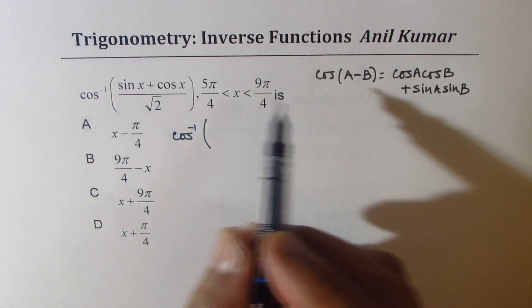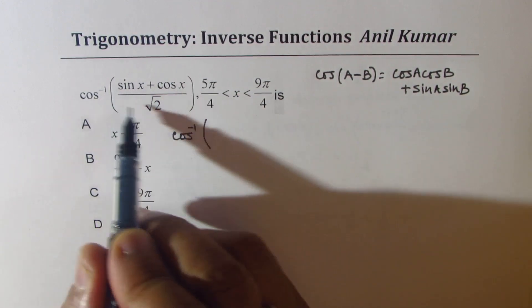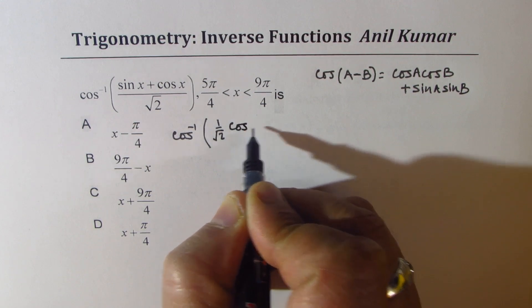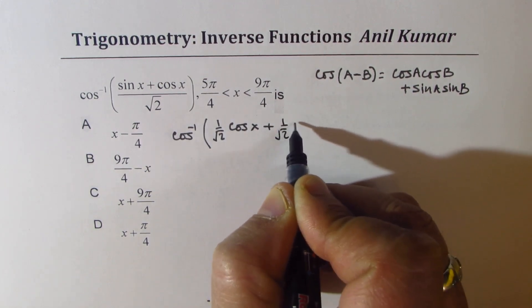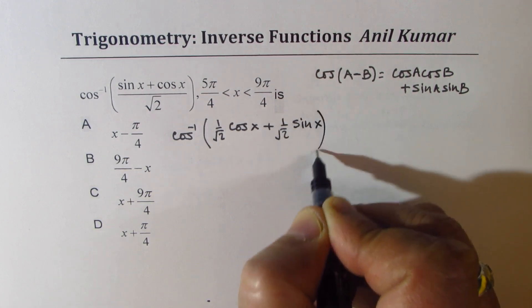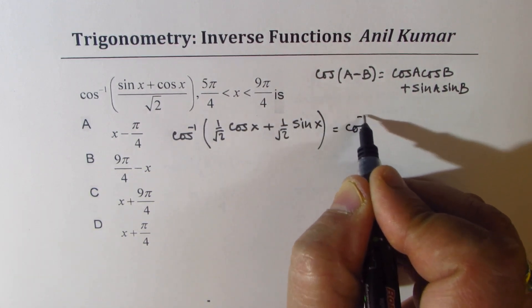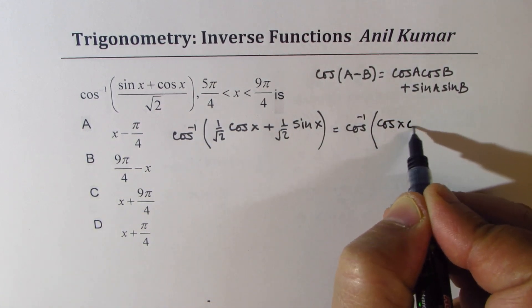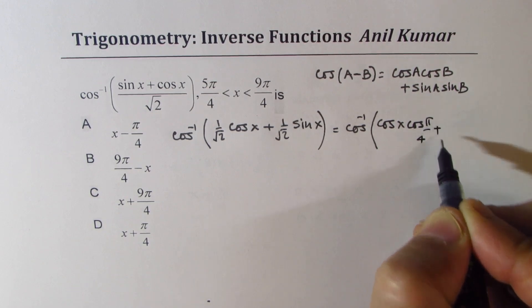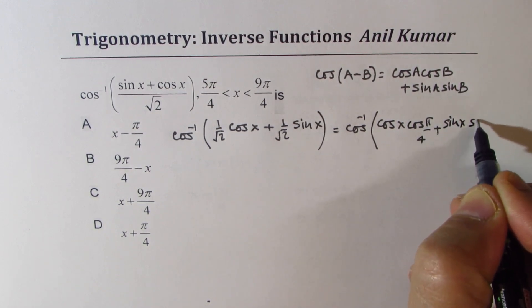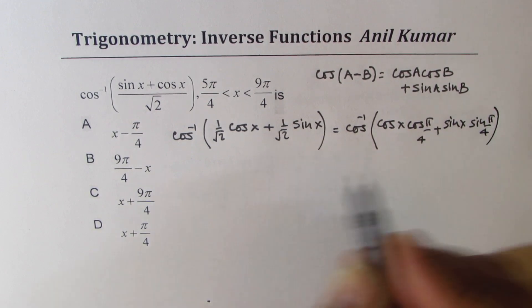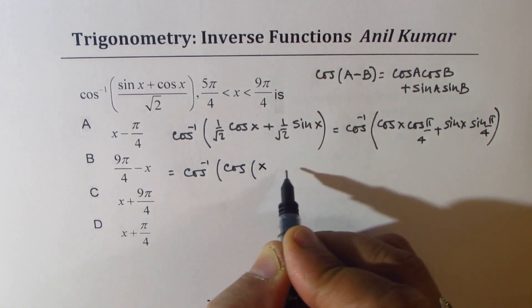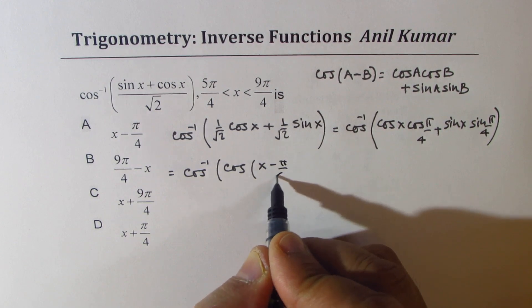We'll use cos(π/4) and sin(π/4). Rearranging: (1/√2)·cos x + (1/√2)·sin x, which we write as cos inverse of cos x · cos(π/4) + sin x · sin(π/4). That gives us cos inverse of cos(x − π/4).